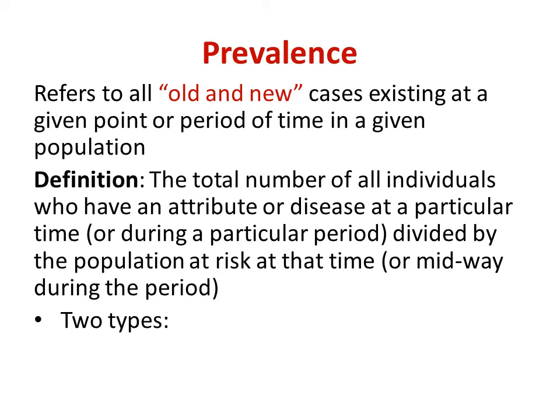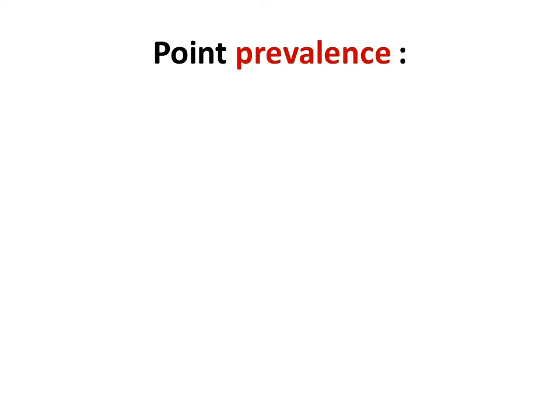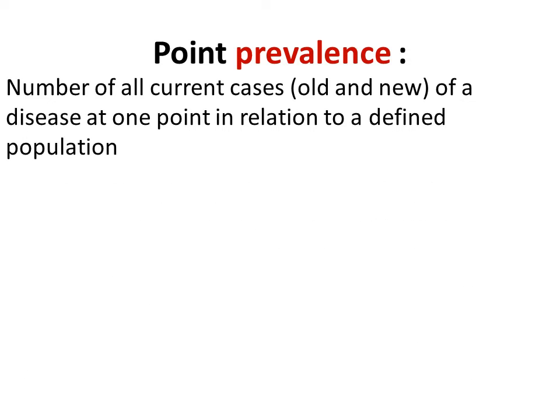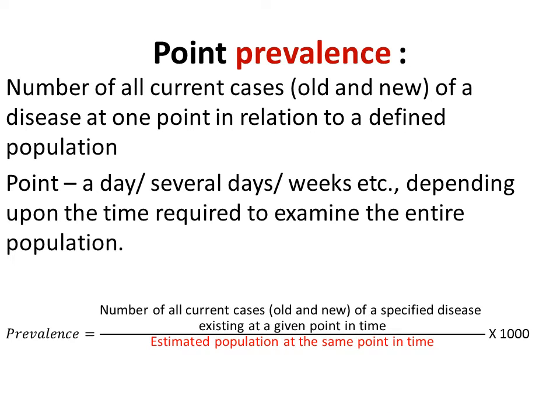Prevalence is of two types: point prevalence and period prevalence. Point prevalence is the number of all current cases — old or new — of a disease present at one point in time in a defined population. The point in time can range from a day to several days to a week or month, depending on the time required to examine the entire population. The formula is: number of all current cases of the specified disease at a given point in time, divided by the estimated population at the same point in time, multiplied by 1000.